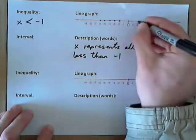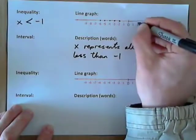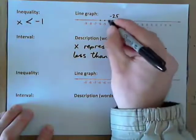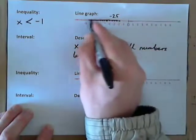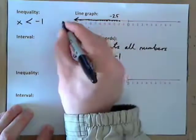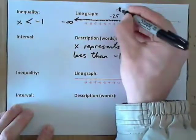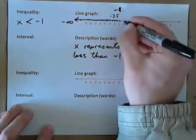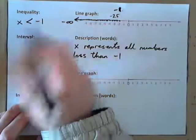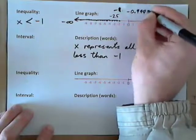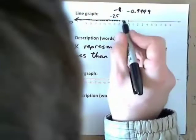How about 2? 2 is greater than negative 1, so that won't work. How about negative 2.5? That's right here — that works, and all the decimals in between. So, we have all these numbers and all the decimals, all the way to negative infinity. How about negative 1? Is that in the set? It says x is less than negative 1, but it's not equal to negative 1. So, negative 1 is not included. How about negative 0.9999? That's right up to negative 1 but doesn't quite reach there — so that is included. So, all the numbers up to negative 1, not including.